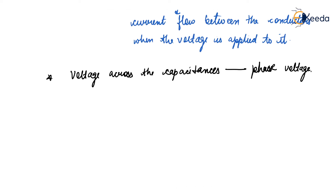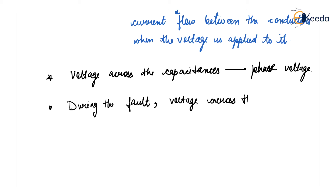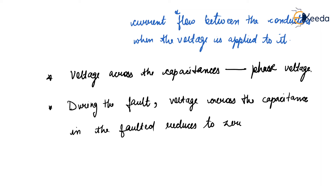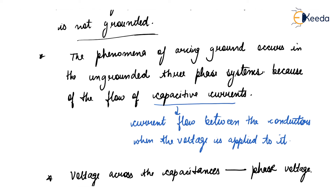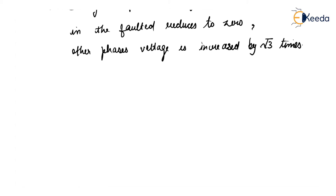So during the fault, the voltage across the capacitance in the faulted phase reduces to zero, while in other phases the voltage is increased by root three times. This is the arcing ground definition.